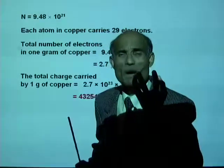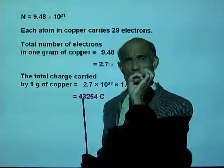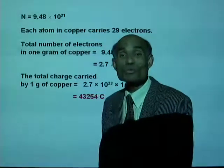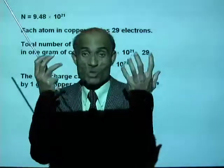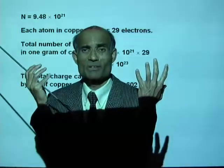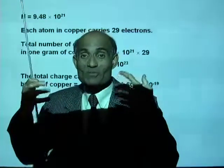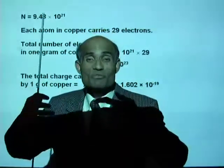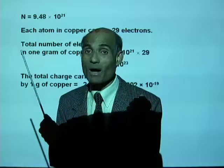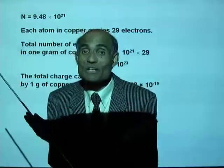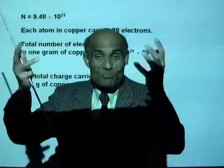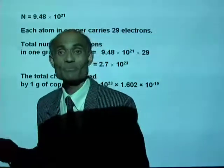That's a tremendous amount of electric charge — one gram of copper carries 43,254 coulombs of charge. In fact, one human body actually carries millions of coulombs of electric charge. All those electric charges are enough to destroy the whole universe, but nothing happens because the negative and positive charges coexist in a very peaceful manner in our beautiful universe.